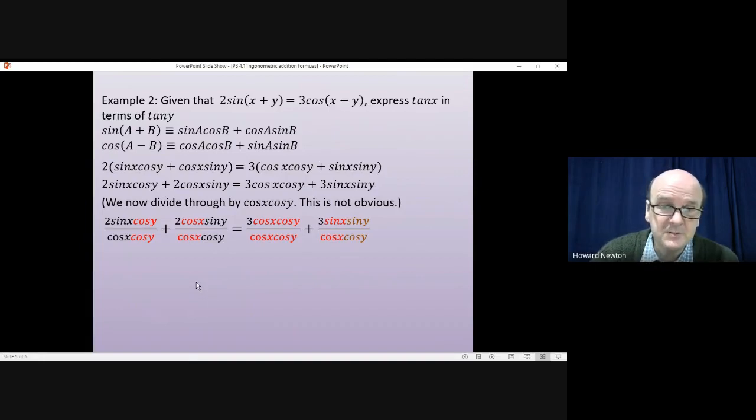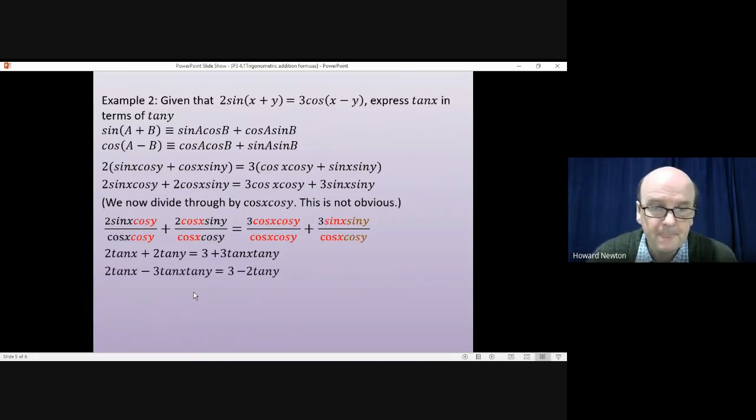Which feels promising because the question asked us to express tan x in terms of tan y. And these remaining two terms as well also include tan x and tan y there. So changing all of those things, that very quickly simplifies to 2tan x + 2tan y = 3 + 3tan x tan y. Rearranging that will give us this, and then factorising to take tan x out on its own. So taking tan x out the brackets will give us tan x(2 - 3tan y) = 3 - 2tan y.